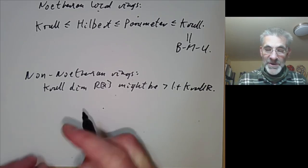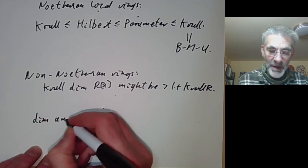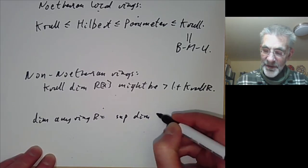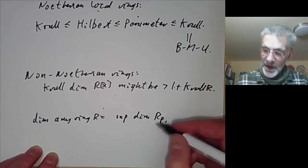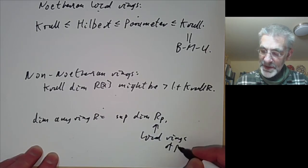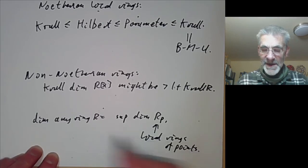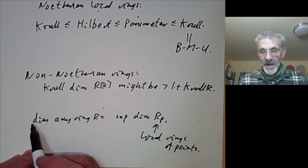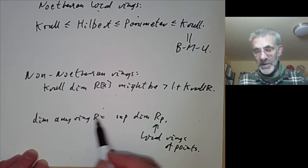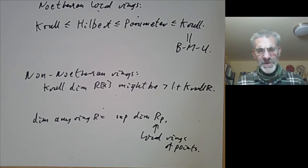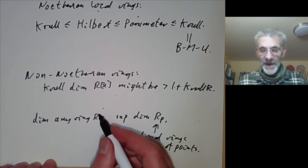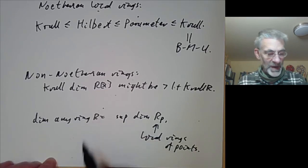We can define the dimension of any ring R as the supremum of the dimension of the local rings R_P at all points P. It is an easy exercise to show this is just another way of defining the Krull dimension of the spectrum of R. If you want the Hilbert polynomial or system of parameters definition, it is not so easy to define dimension directly for a non-local ring.